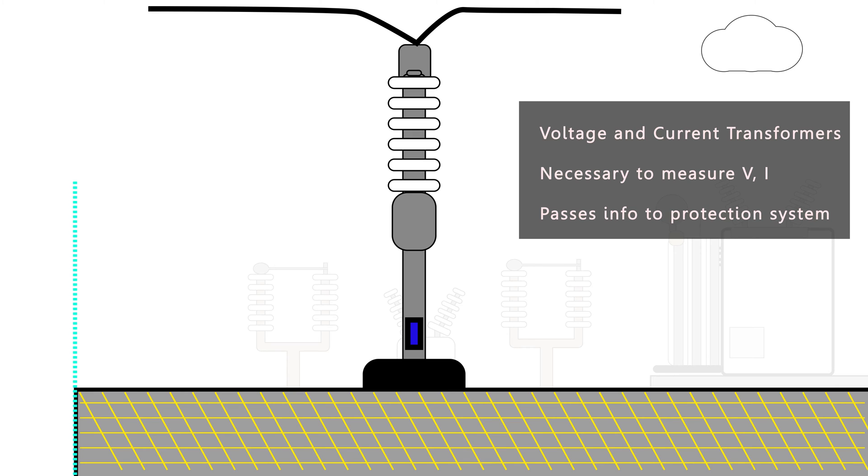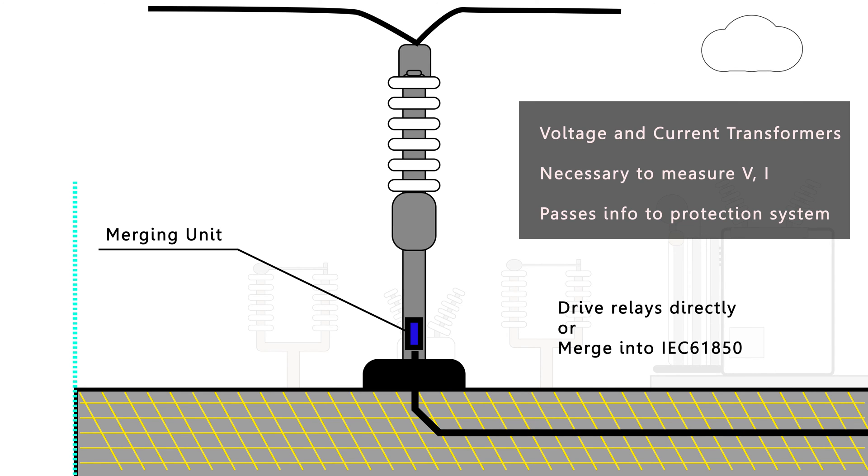Modern VTs and CTs have merging units. These convert the measured voltage and current into a digital form that can then be passed into IEC 61850, which is a new communication protocol for handling digital information inside a substation. Old-fashioned CTs and VTs can send the recorded signal straight to a relay.